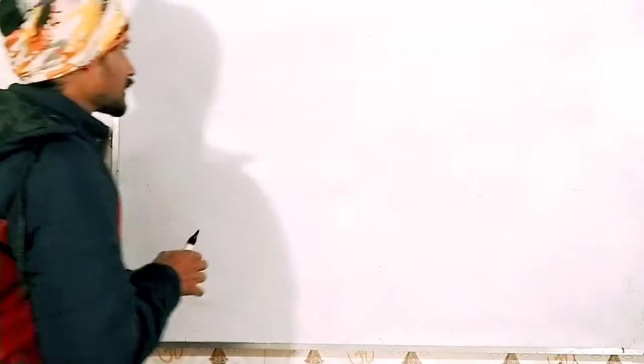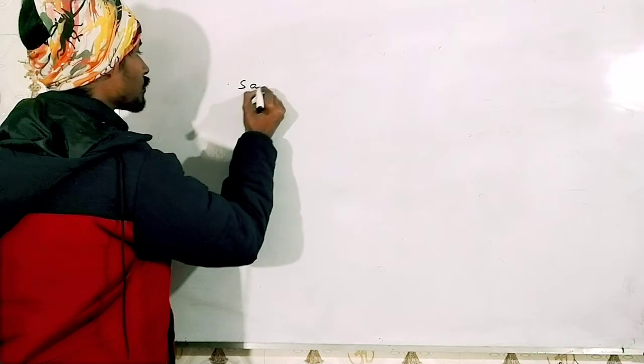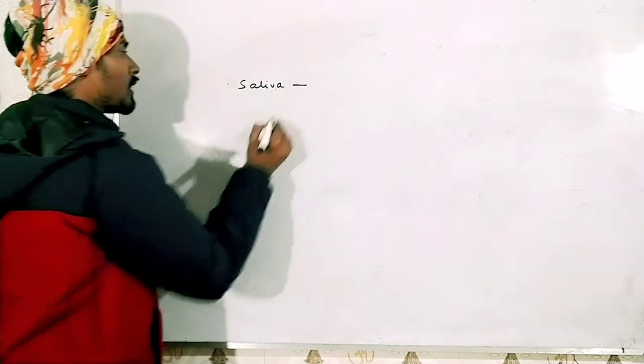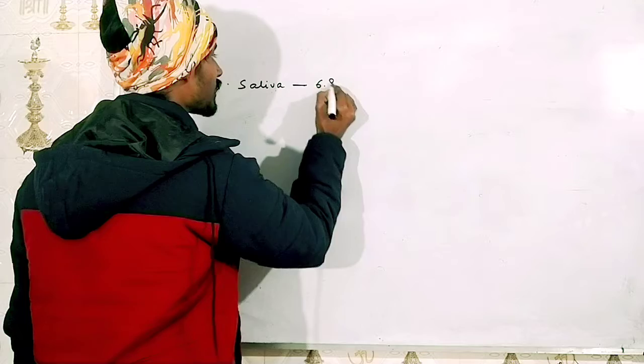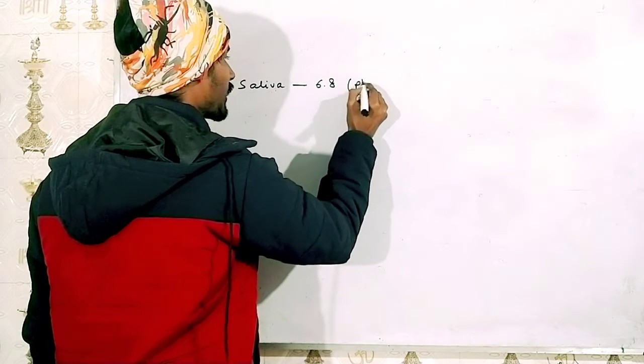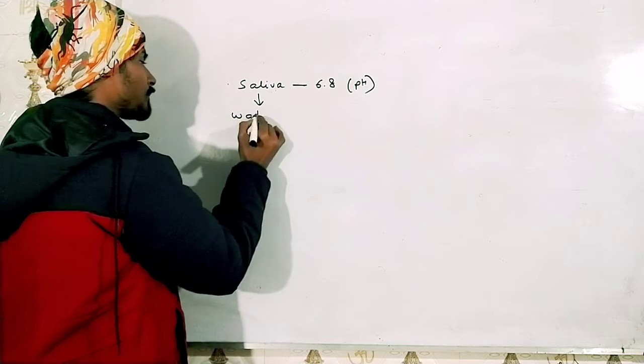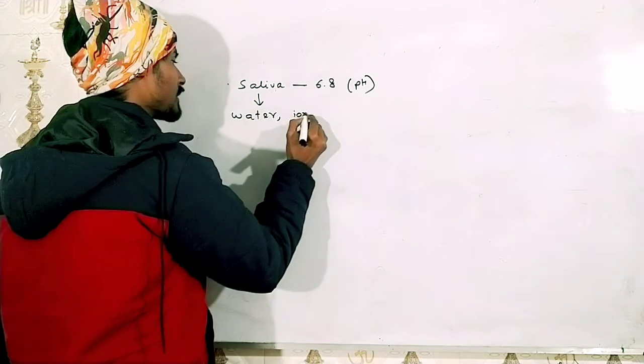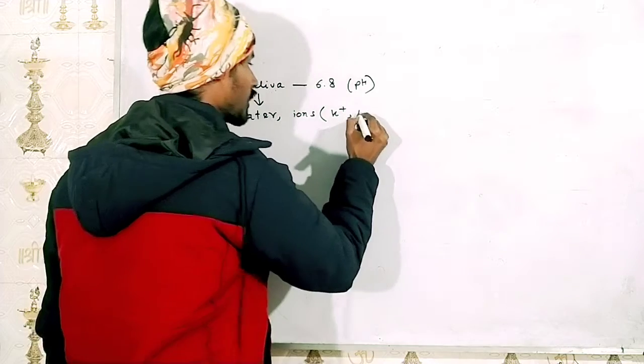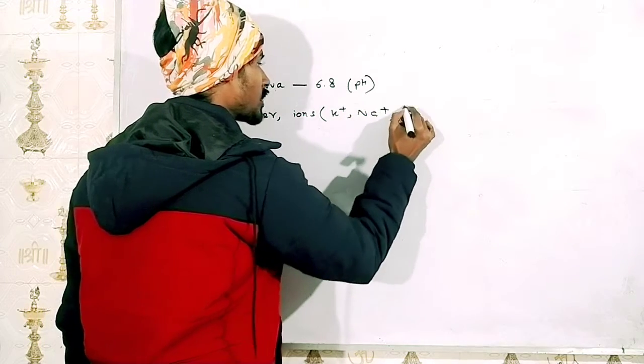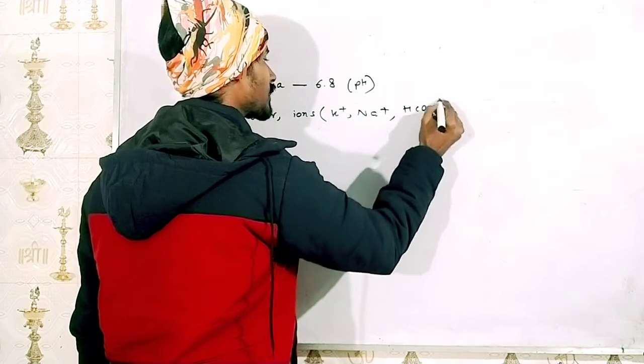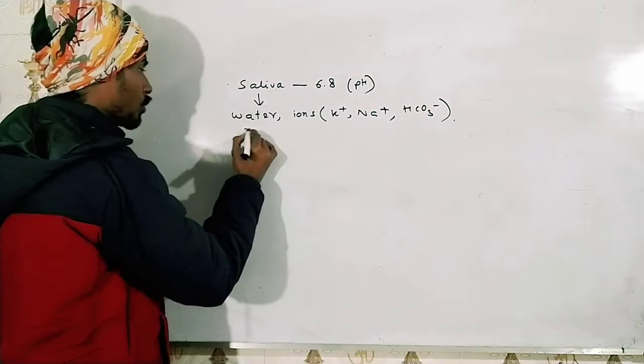Now let us talk about saliva. Saliva is slightly acidic in nature, so saliva has a pH of 6.8. Now it contains water, ions, for example potassium plus, sodium plus, bicarbonate ions, etc., and mucus.